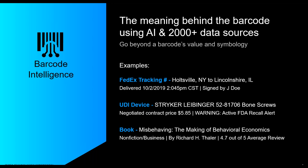Examples of meaning behind the barcode include a FedEx tracking number — is it a package, where is it going, is it on time? Or a UDI device like a stent or pacemaker — is there a problem with it, do you need to display more information? Something as simple as pulling a product image so a frontline worker can look at it and verify what was scanned matches what's expected, or even looking up a book or basic product identification.